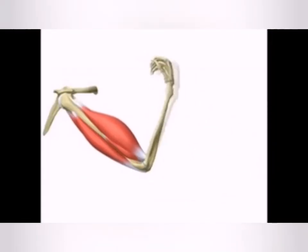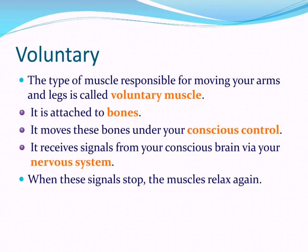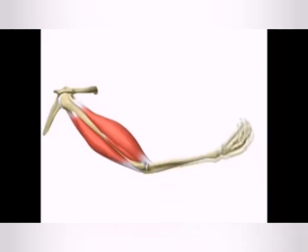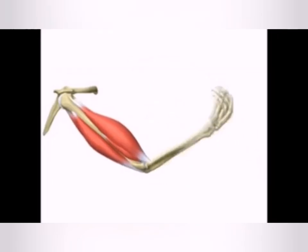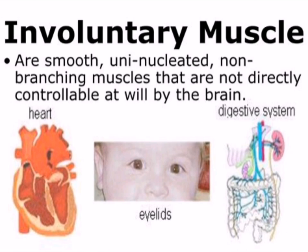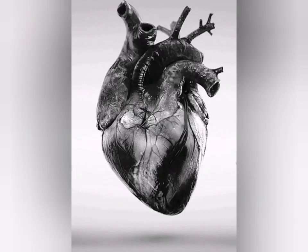Some muscles are voluntary and some are involuntary. Muscles that you can control are called voluntary muscles. The muscles of your hand and leg are examples of voluntary muscles. Muscles that function on their own are known as involuntary muscles. You cannot control the movement of involuntary muscles — your heart is an example of involuntary muscles.